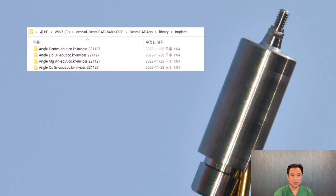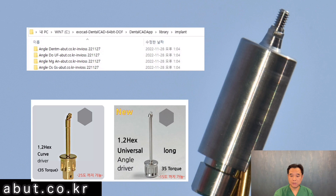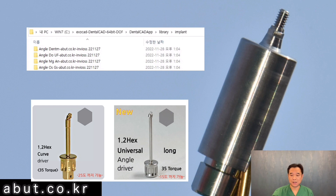In the diagram below, there are two types of drivers. One is a hook-type gold driver that can bend up to 25 degrees, and the other is a silver driver that can bend up to 15 degrees. Both drivers can safely tighten up to 35 torque. The 25-degree driver is more useful for prosthetics, but there's a slight vibration. Therefore, the less vibrating, smooth 15-degree driver is used more commonly. Having both types of drivers can be very useful.